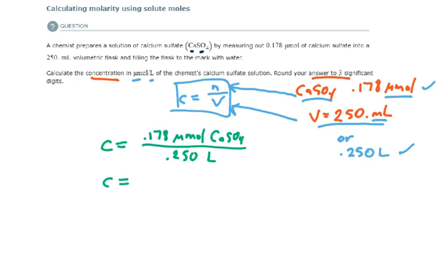So, concentration is equal to 0.712 micromoles per liter. This could also be reported as 0.712 micromolar or 0.712 μM.